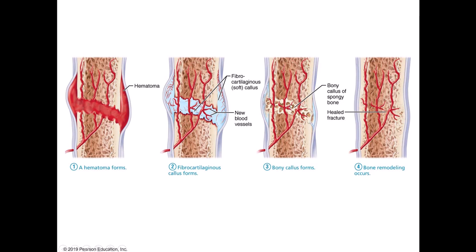Once the blood vessels have fully healed and are complete, we get oxygen, nutrients, immune cells, and osteoblasts, and we start to lay down spongy bone again — we get the formation of a bony callus. The bone will completely heal; it takes a long time, but it will eventually fully heal and generally regain its full strength. Then, after the bone has fully healed, there will be a little bit of remodeling to try to get it back to its proportions from beforehand.